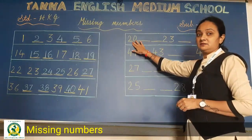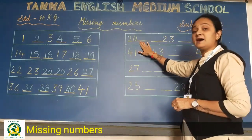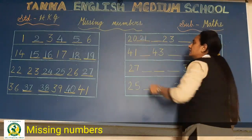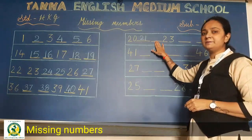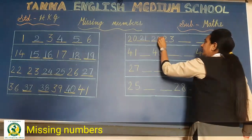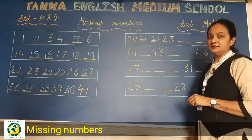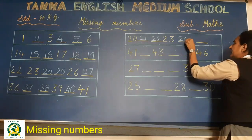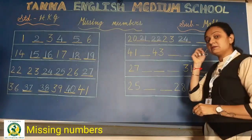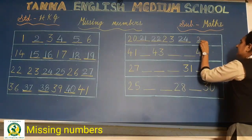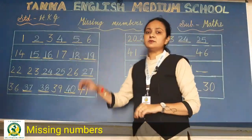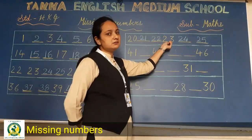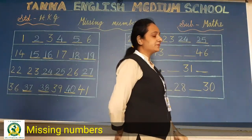अभी उसके नीचे देखो. 20 is written. So 20 के बाद क्या होगा, what will come after 20? 21. So write here 21. After 21 what will come? 22. Then see 23 is written. So what will come after 23? 24, and what will come after 24? 25. So this line also we have completed: 20, 21, 22, 23, 24, 25. Okay.